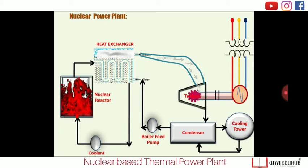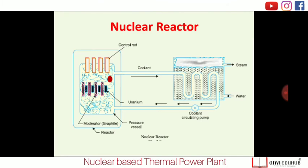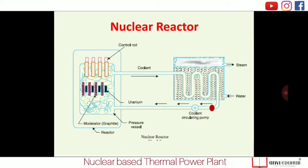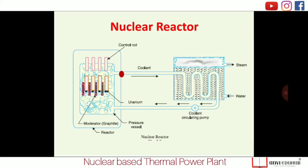A strong control system must be implemented for the nuclear fusion process. The chain reaction is controlled using control rods made of cadmium. Cadmium is a good neutron absorber — when excessive heat is being generated, the control rods are inserted into the nuclear reactor. The cadmium rods then absorb neutrons, leaving very few neutrons available for further fusion, thereby controlling the chain reaction. This control system is very important for the nuclear reactor.